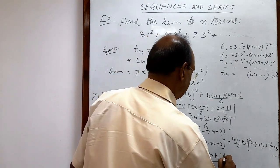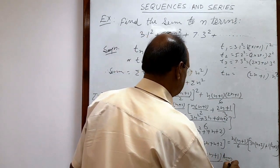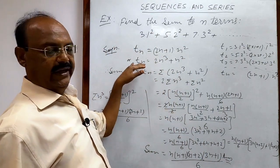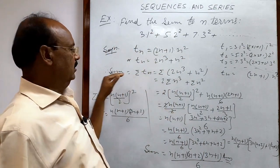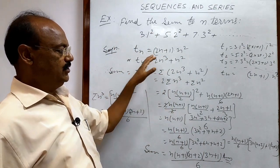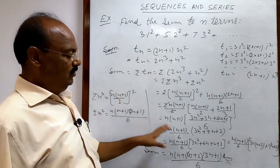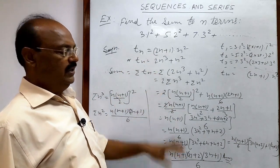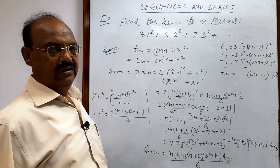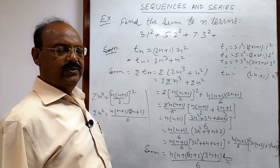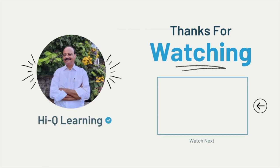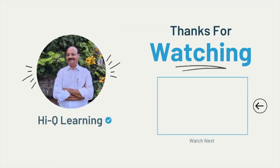So this is the final answer. In this type of problem, first write the nth term, then apply sigma to each term and use the standard formulas — we get the answer very easily. The question is very interesting and also very important. Thank you very much for watching this video, wish you all the best.